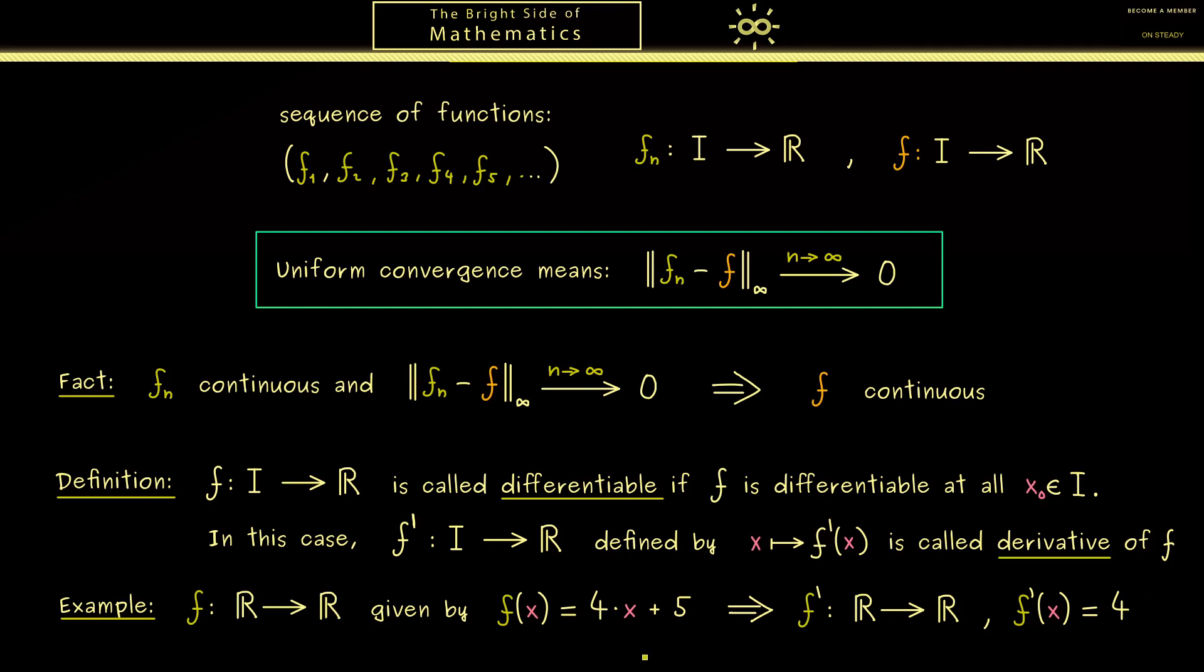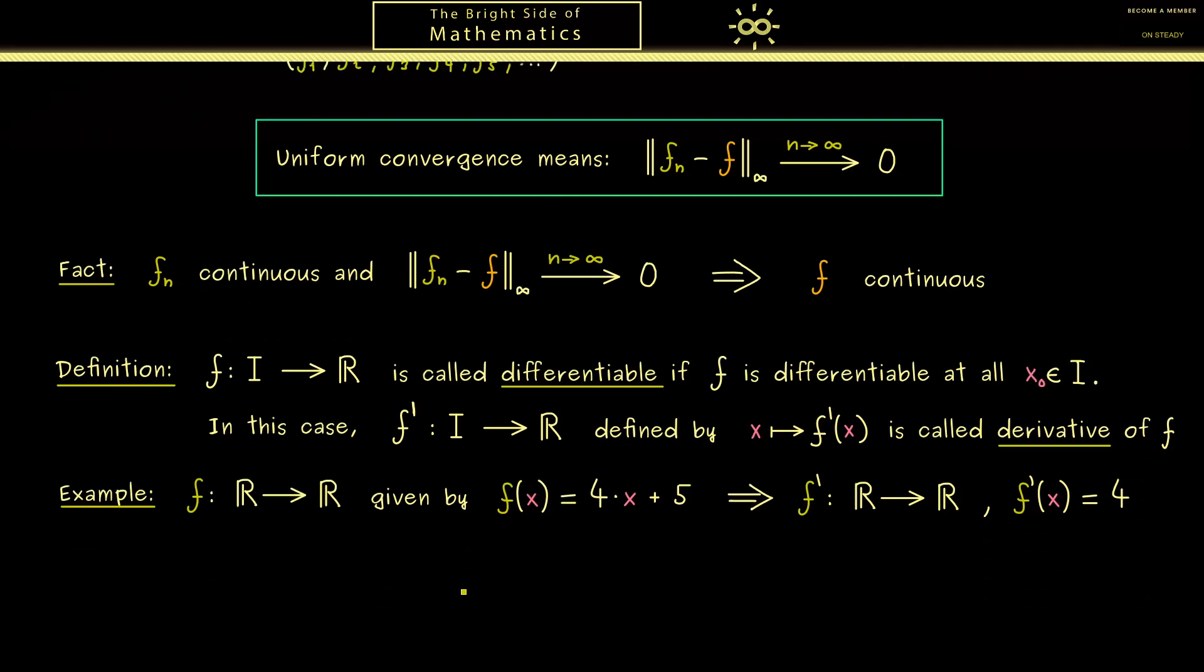The important fact here is that we get immediately a new function f' with the same domain as the original function. When we have a whole sequence of such functions, we can ask what happens with uniform convergence. And that's what we now formulate in a nice theorem.